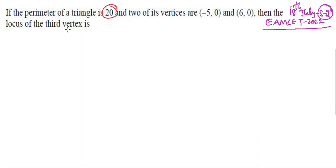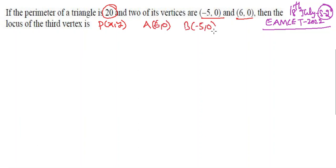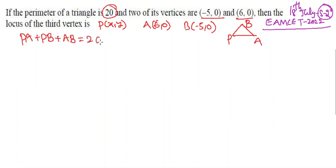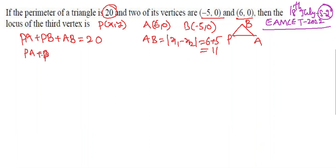If the perimeter of the triangle is given as 20 and two of its vertices are (−5, 0) and (6, 0), find the locus of the third vertex. Take the third vertex as P(x, y), A as (6, 0), and B as (−5, 0). Perimeter: PA + PB + AB = 20. AB = |6−(−5)| = 11. So PA + PB = 20−11 = 9.